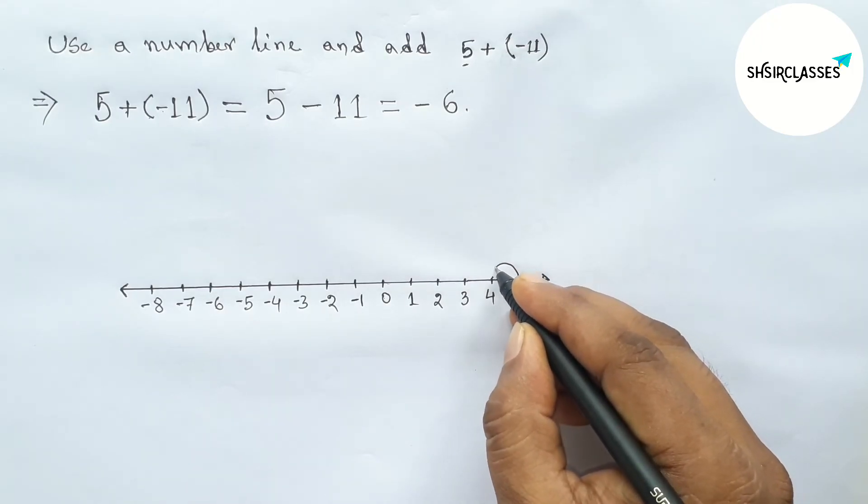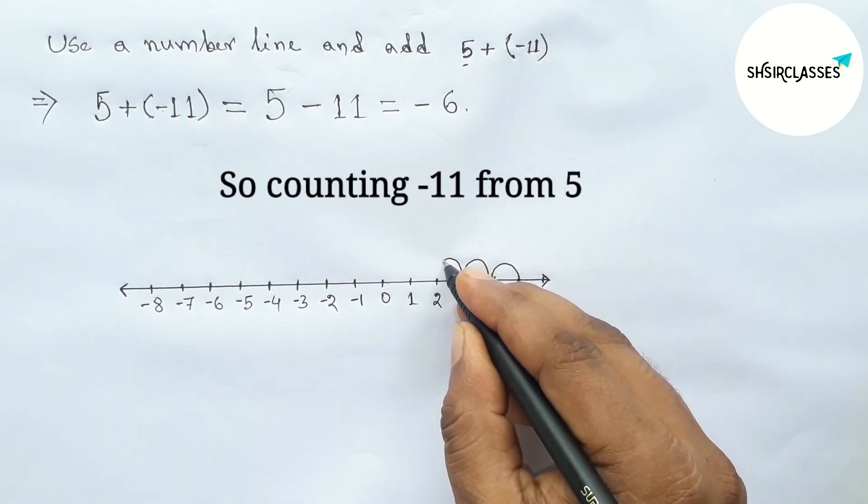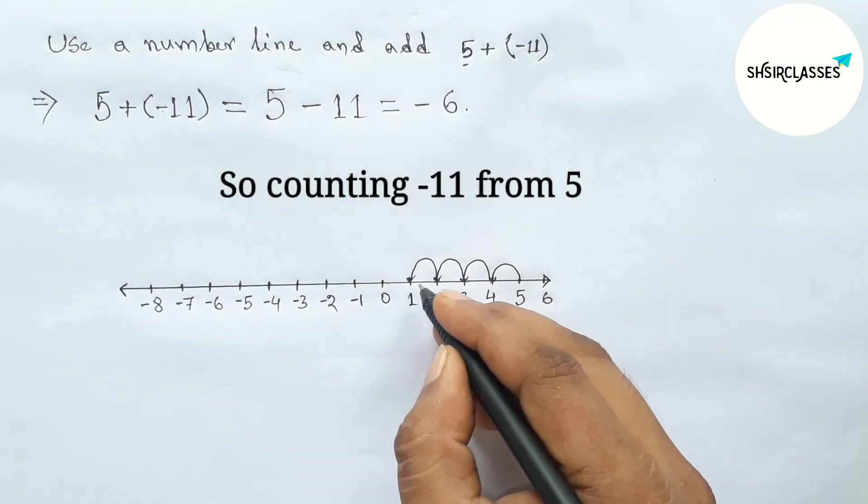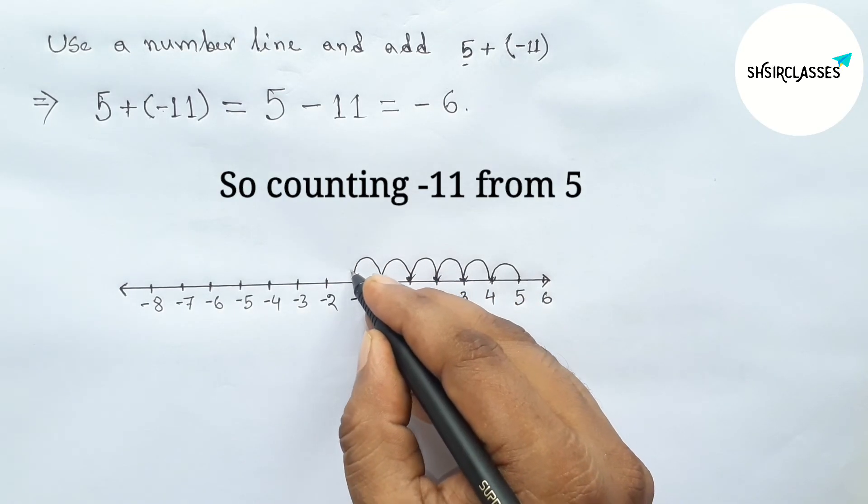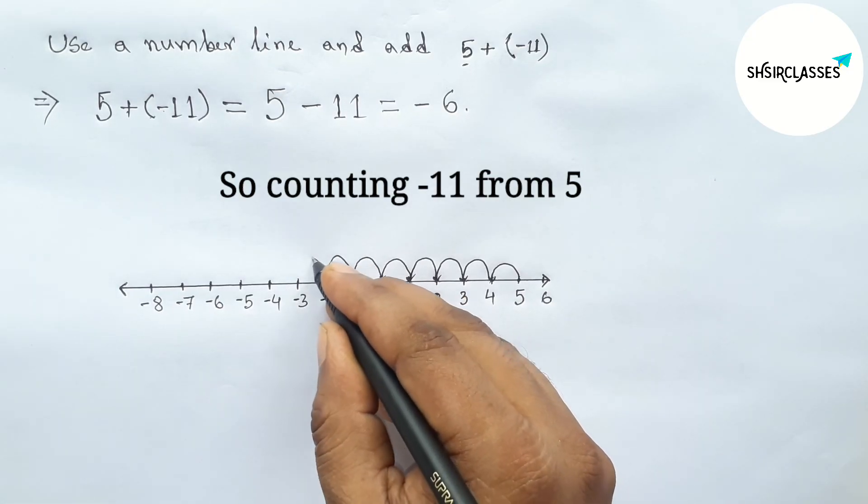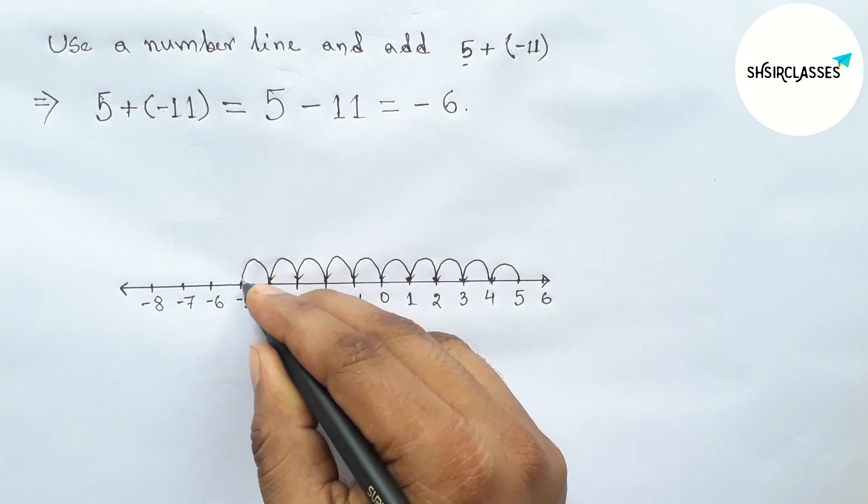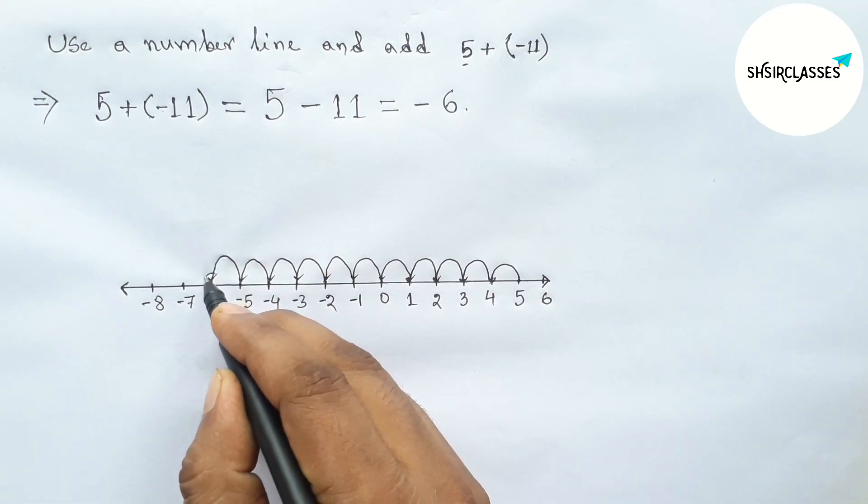Minus 1, then minus 2, minus 3, minus 4, minus 5, minus 6, minus 7, minus 8, minus 9, minus 10, minus 11. So here minus 6 is the answer. So here answer minus 6 on the number line.